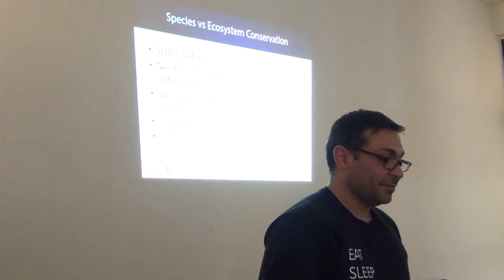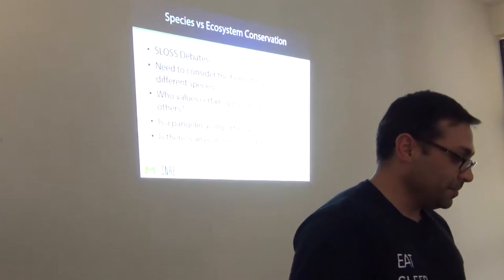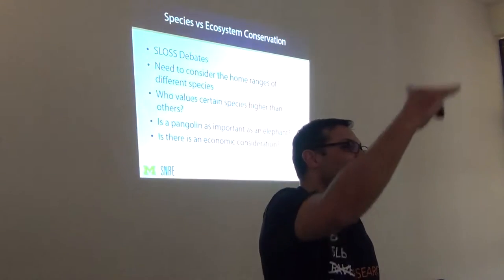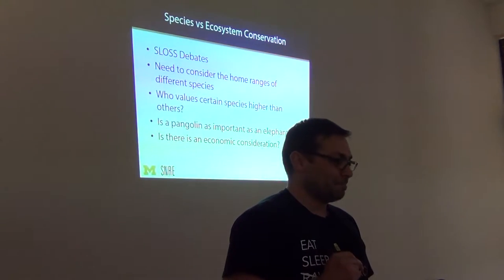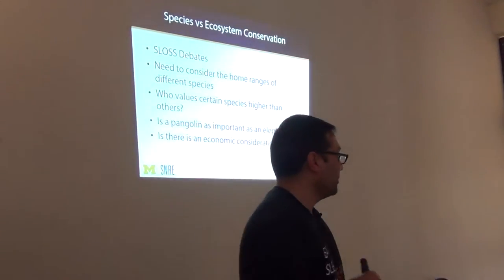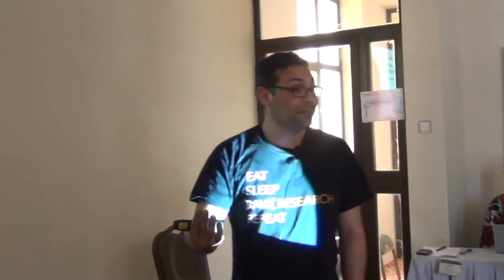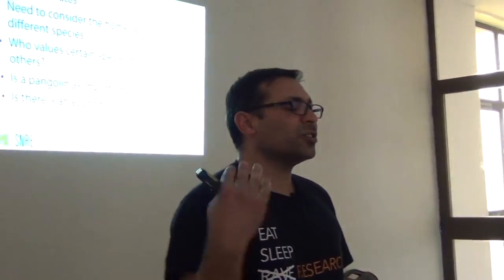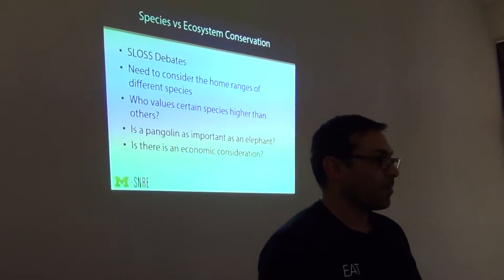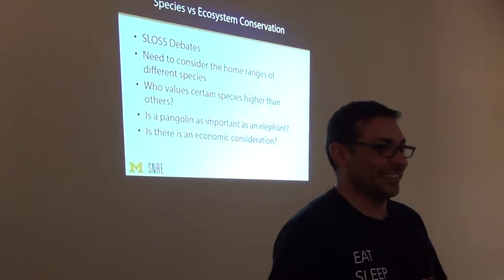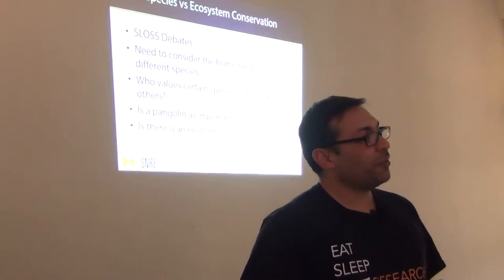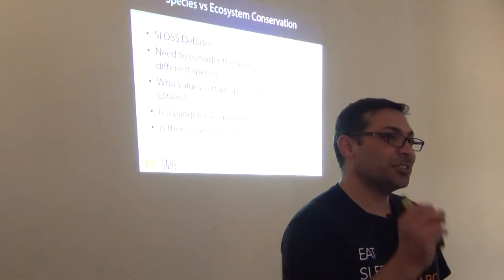We don't want to devalue certain species — we want a gradient of value. I would actually say it's a process of overvaluing the spectacular and the beautiful. I think that's a great point — we overvalue the spectacular and the beautiful. So how many of you think an ostrich is a beautiful creature? Four out of twenty. The Maasai word for ostrich is 'acidite', which means 'beautiful'.